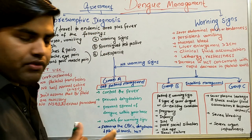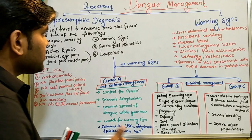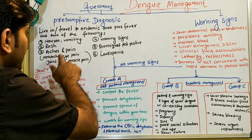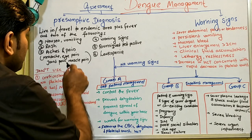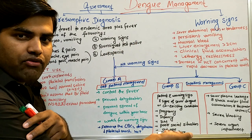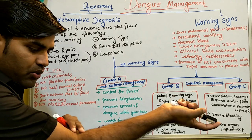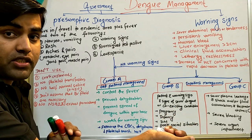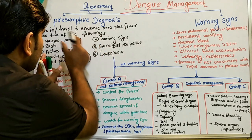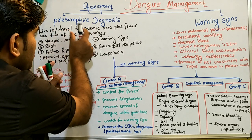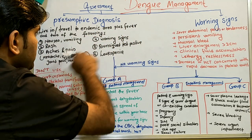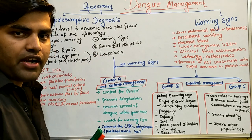Regarding presumptive diagnosis: if a patient lives in or has travelled to an endemic area, has fever, plus two of the following — nausea, vomiting, rash, aches and pains such as headache, eye pain, or muscle pain — that supports presumptive dengue. The tourniquet test is also relevant: apply the blood pressure cuff between systolic and diastolic for five minutes, and if you find 10 or more petechiae per square inch, the test is positive. Leukopenia also supports the presumptive diagnosis.